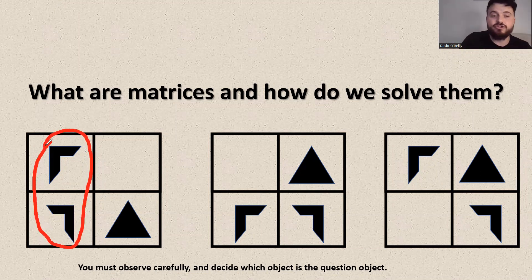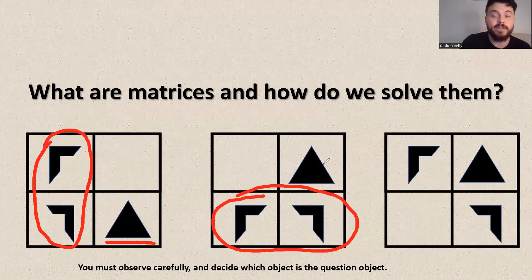Therefore, the question object is the triangle. We need to work out what would go in the top right box. In the second grid, once again, we know that these two are the same object, but something has changed between them. So therefore, we know that we have to find the answer to this triangle.